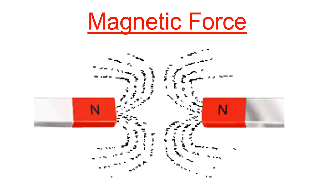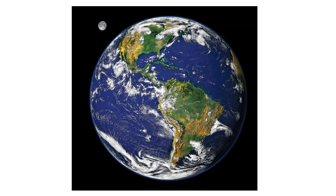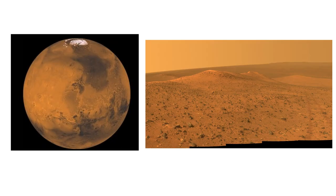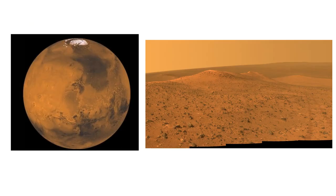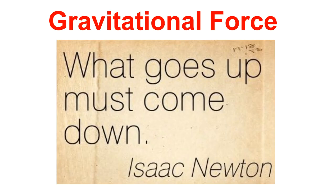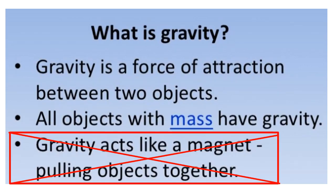The electrostatic force: opposite charges attract, like charges repel. The magnetic force acts without touching. In fact, Earth's magnetic field — generated by its iron core — acts like a force field blocking the Sun's radiation, which would otherwise strip our atmosphere away. That's why Earth looks lush while Mars is a cold, lifeless desert.